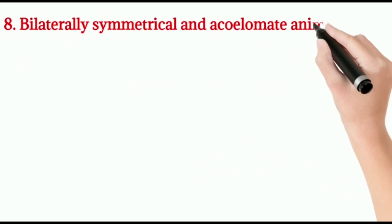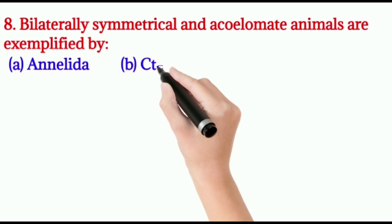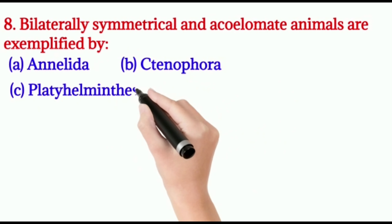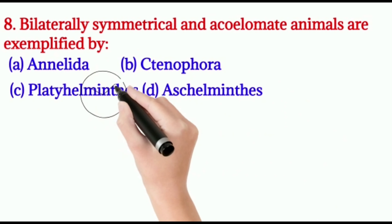Question number eight: bilaterally symmetrical and acoelomate animals are exemplified by — A: Annelida, B: Ctenophora, C: Platyhelminthes, D: Aschelminthes. The right option is C, Platyhelminthes, because Platyhelminthes animals do not have a coelom, so they are called acoelomate animals, and they show bilateral symmetry.